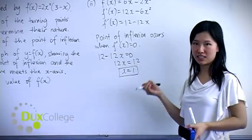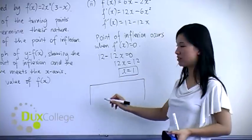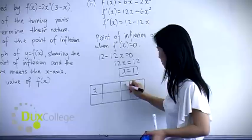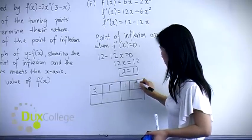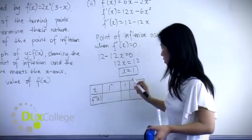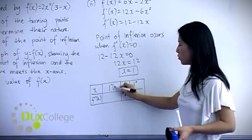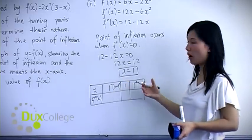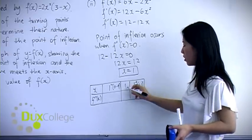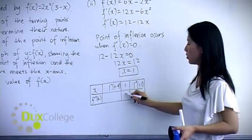You must test your point of inflection by using the second derivative table. So you have 1, 1⁻ means a bit less than 1, so you use the point 0.9. And 1⁺ means a bit more than 1, so we use the point 1.1. So when you substitute 1 into your second derivative, you get 0.